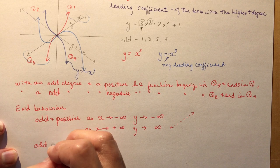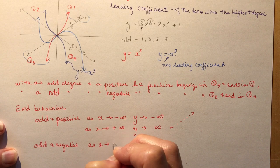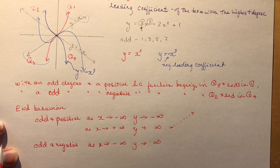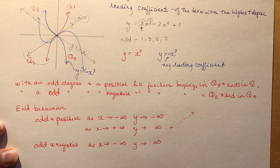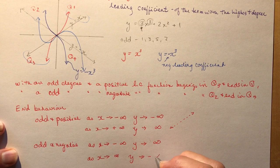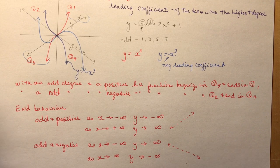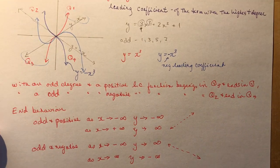For odd and negative, it's going to be the other way. As X approaches negative infinity, Y approaches positive infinity — we're starting in Q2, so it's coming from way up here. And as X approaches positive infinity, Y approaches negative infinity. That's just like a negative slope line. All you have to do is remember whether you have positive or negative slope — think of a line first, and that will apply to your cubic function.